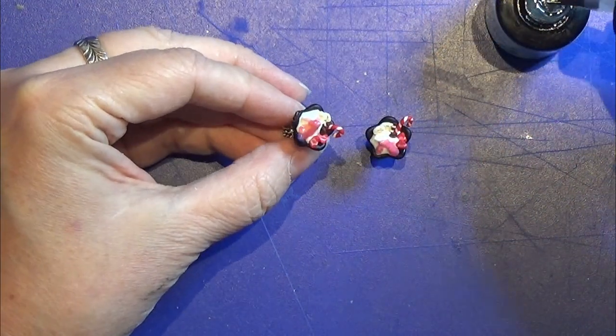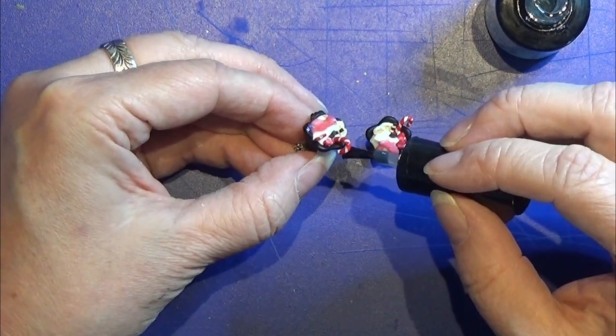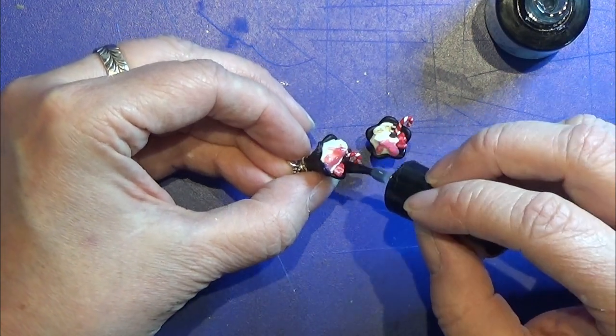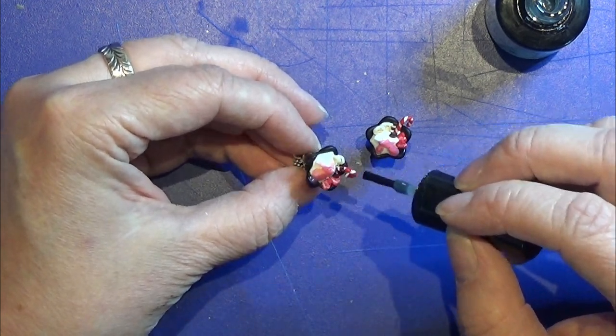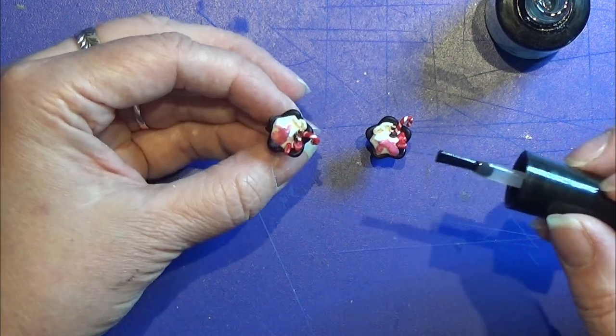When it's all dried, I am using some UV resin to glaze the fruity parts on these desserts, and then I'm placing them under my UV light for a few minutes.